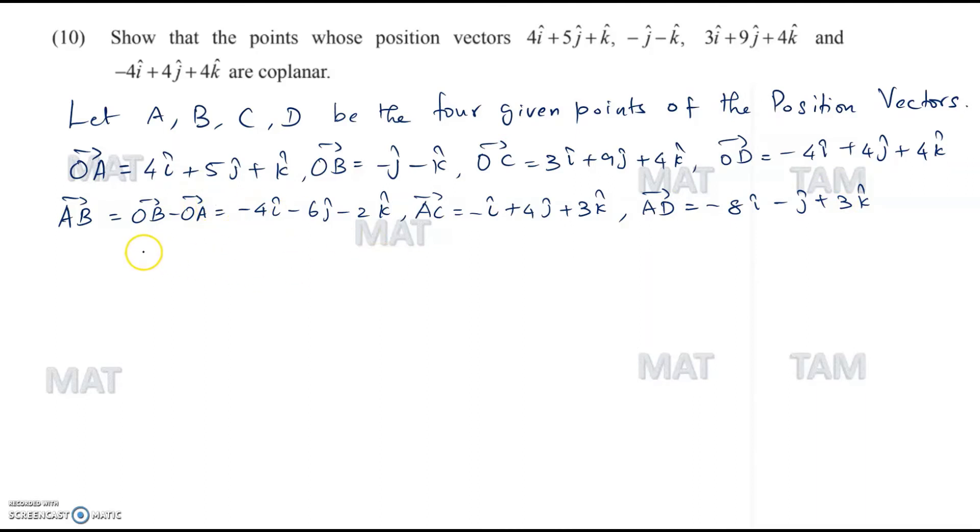Following the same method, now let's assume that our vector A is equal to AB vector, vector B is equal to AC vector, and vector C is equal to AD. To prove vector A is equal to M B vector plus N C vector for A, B, and C to be coplanar, let's substitute A, B, and C in this.